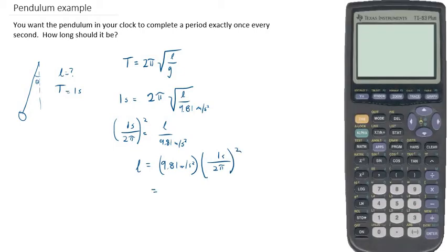I could even be a little more clear about how I might type this into my calculator. I've got 9.81 meters per second squared. 1 squared is still just 1, so it'll be 1 second squared. And then the 2π has to be squared. So 2 squared is 4, and then we've got π squared.